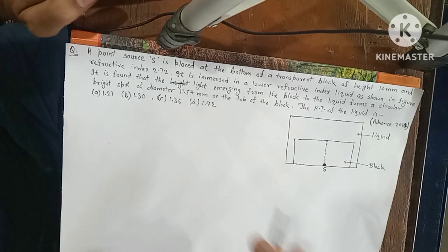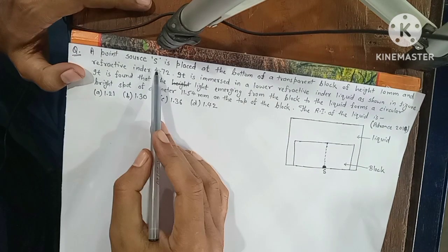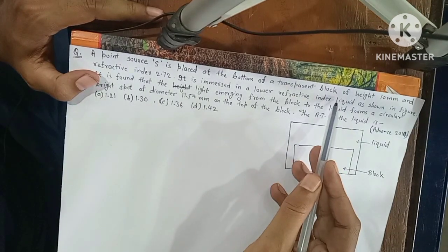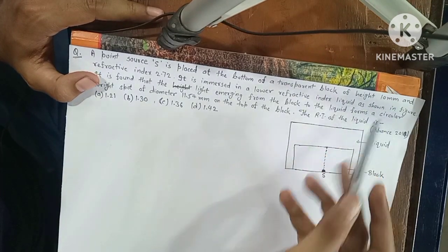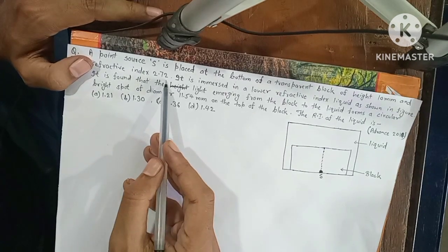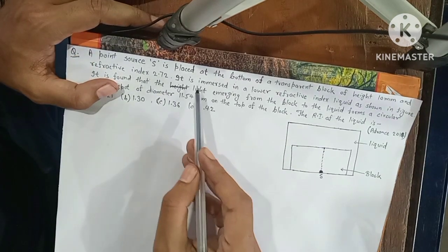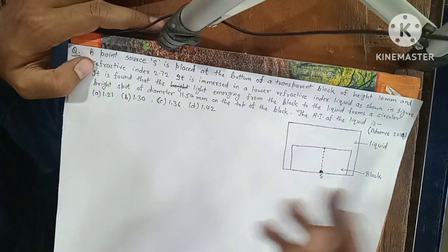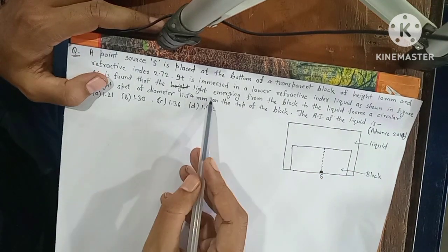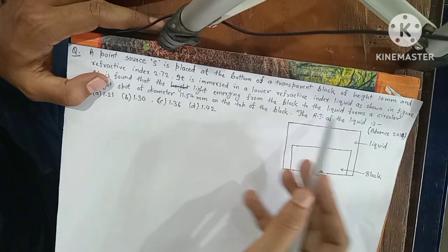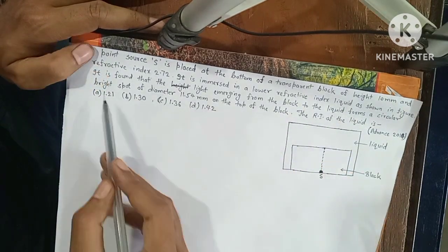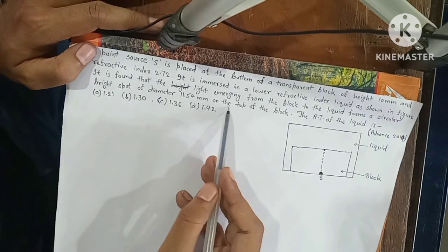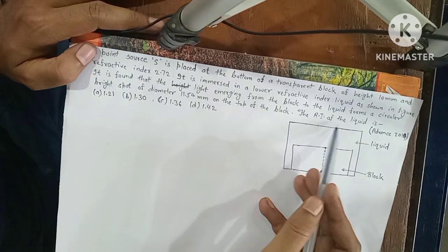The question is: a point source S is placed at the bottom of a transparent block of height 10 mm and refractive index 2.72. It is immersed in a lower refractive index liquid. It is found that the light emerging from the block to the liquid forms a circular bright spot of diameter 11.54 mm on the top of the block. The refractive index of the liquid is?